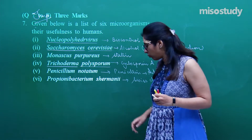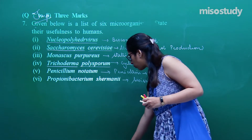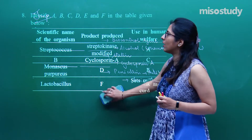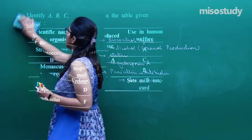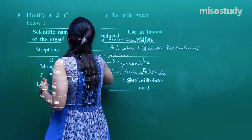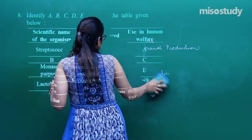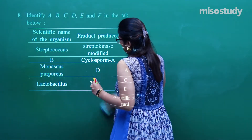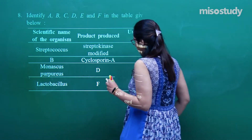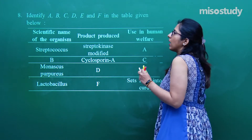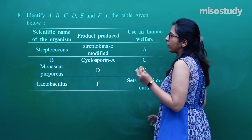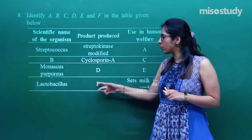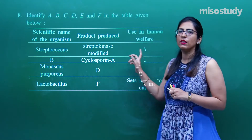Now let's move on to question number 8, which is again of 3 marks. Earlier I discussed different types of microbes, and these microbes can also be asked in fill-in-the-table form, where certain spaces will not have any words and you have to fill them in.